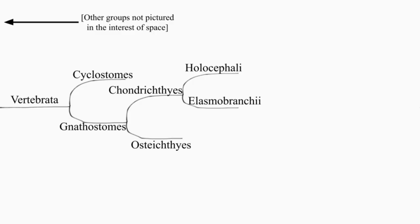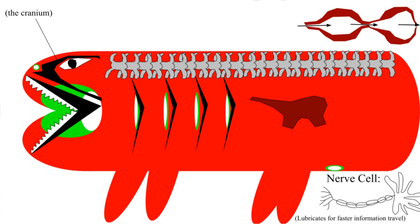Chondrichthyes divide into whole head and metal plate gills. Holocephaly have their jaw firmly attached to their skull, three sets of teeth, and four gills, while the elasmobranchi have their jaw loosely attached to their skull, infinite sets of teeth, and five to seven gills.